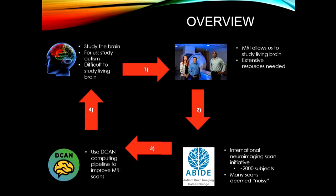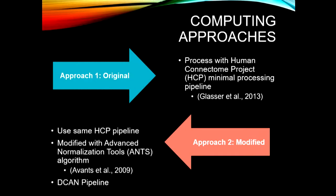The next thing I'm going to talk about is our Deakin computing pipeline, which we're going to be using to try to improve the MRI scans. There are going to be two main approaches. Approach one uses the original Human Connectome Project — the HCP minimal pre-processing pipeline. This pipeline was created by Glasser and his colleagues to process MRI imaging scans and is the latest state-of-the-art pipeline. A lot of individuals are able to use this pipeline to create high-quality imaging scans. But the issue with the ABIDE dataset is that the scans weren't originally made to be put through this pipeline.